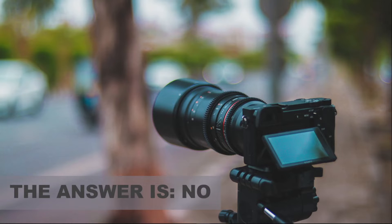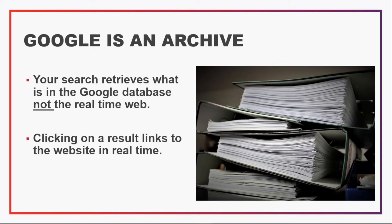This is important to remember because it means you are seeing the world through Google's lens. Google will show you information based on what it assumes about you and what you want to see. Google is an archive — your search is just through Google's database, not through the real-time web. It's only when you click on the website in the search results that you get the most up-to-date version.